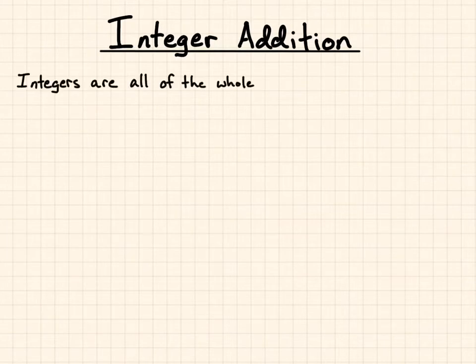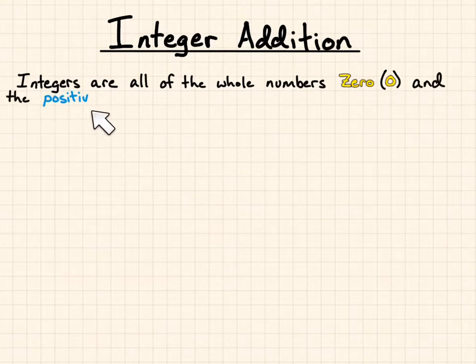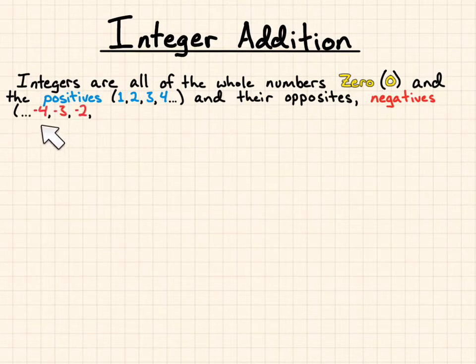Integers are all of the whole numbers. That's zero and the positives 1, 2, 3, 4 as well as their opposites, so the negative numbers as well. So the only thing that's not in there is fractions. It's just 0, 1, 2, 3, 4 going in the positive direction. Negative 1, negative 2, negative 3, negative 4 and keeps going in the negative direction.